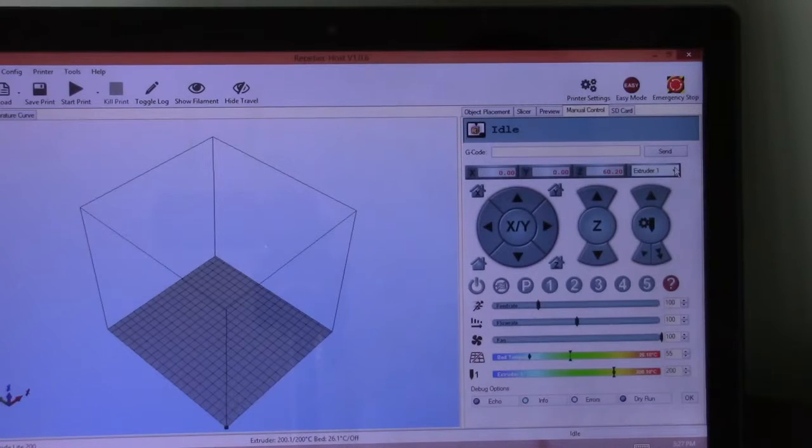Okay guys, so the first thing I did is I came in here to RapidTier Host, I connected the printer, and then I came down here and I turned the extruder on, this button here. The temperature will come up to this preset mark, and then I also turned the fan on. So it's off when it has the line through it, and then it's on when the line is not through it.